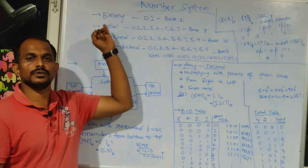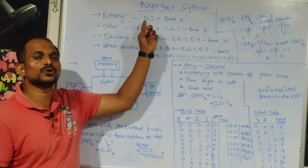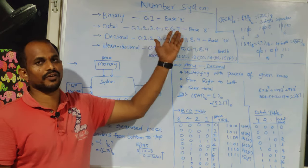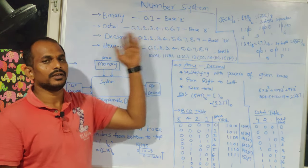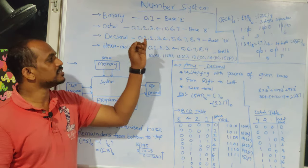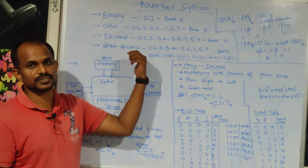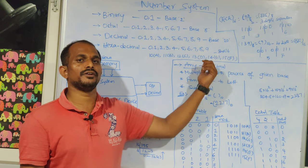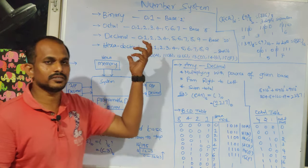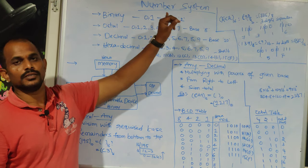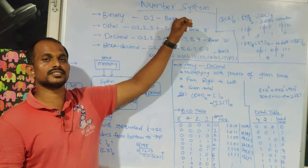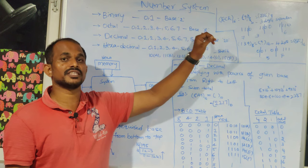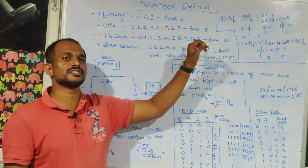There are four different number systems. The first is binary, which has only zeros and ones. The second is octal, which provides 0 to 7. The third is decimal, which is 0 to 9. The fourth is hexadecimal, which goes from 0 to F — meaning 0 to 9 and then 10 through 15. These are represented by their respective base numbers: binary is base 2, octal is base 8, decimal is base 10, and hexadecimal is base 16.